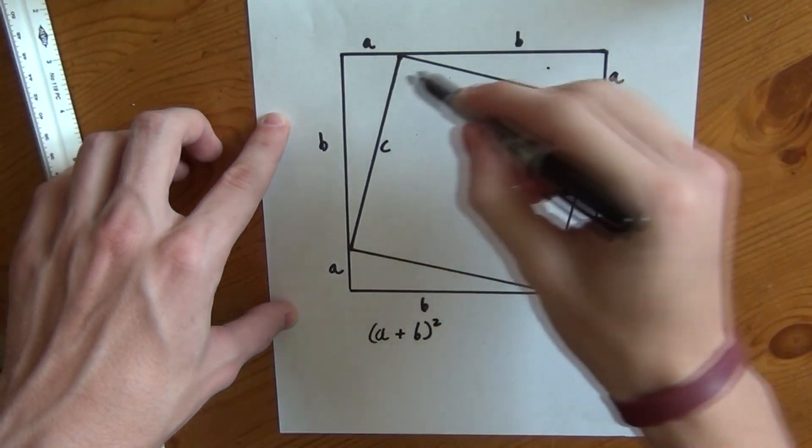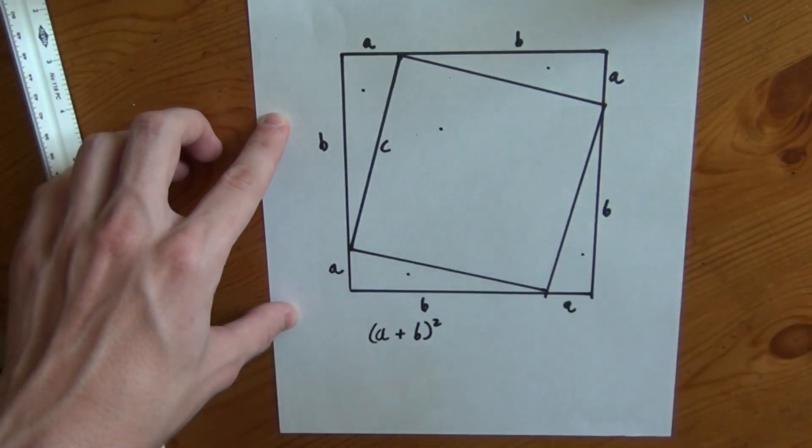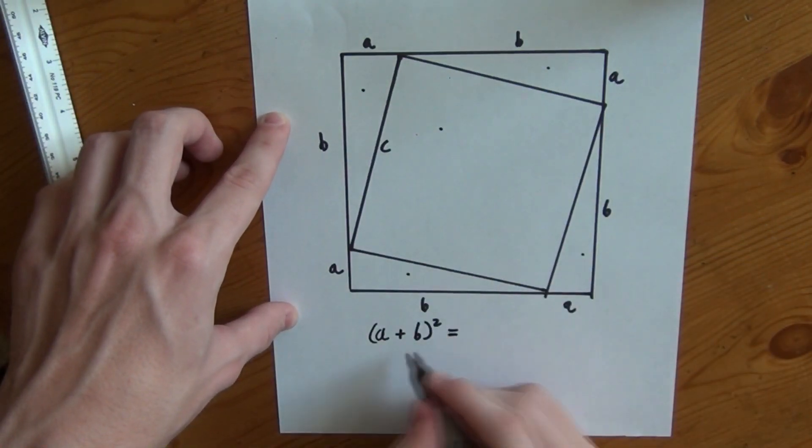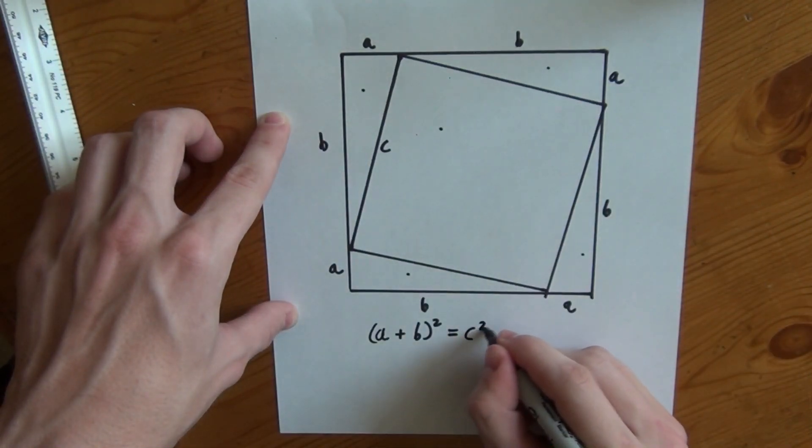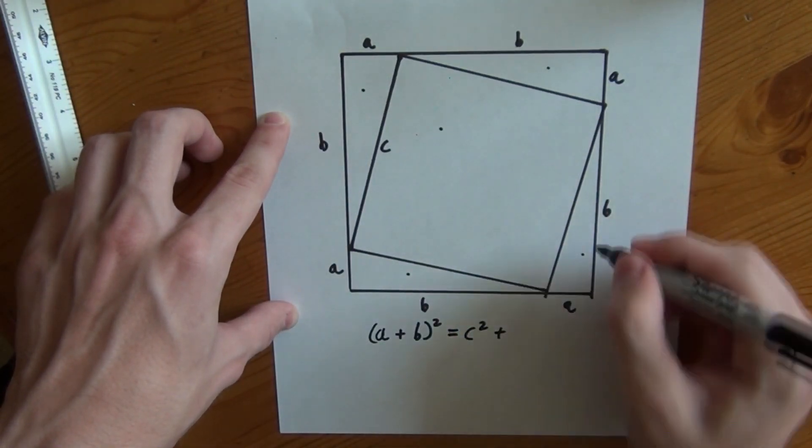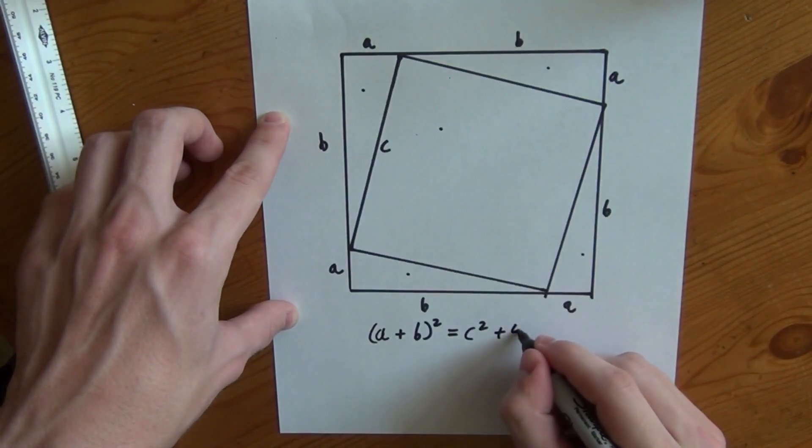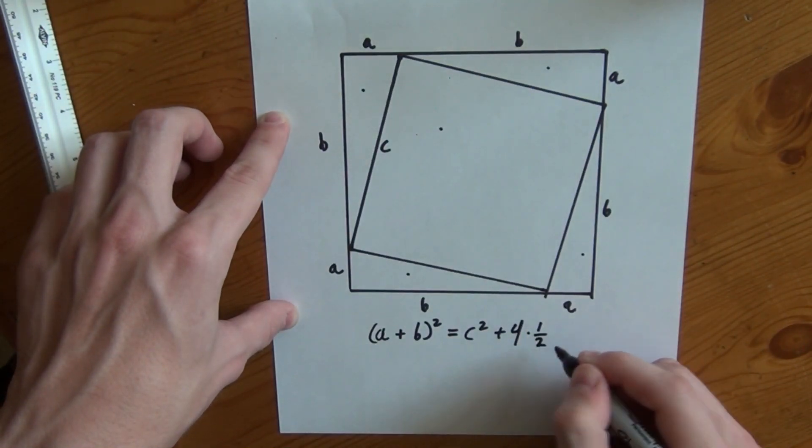Now what we can do is add up each individual area here and that should equal this as well. So that's the area of the smaller square which is C squared added to the four triangles. Four times one-half A times B.